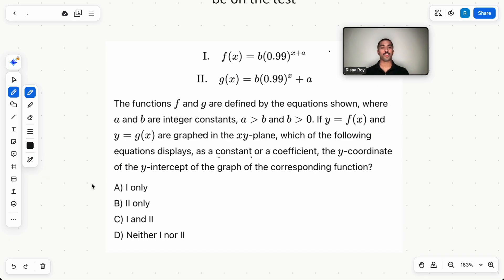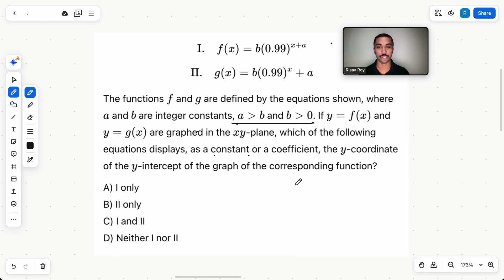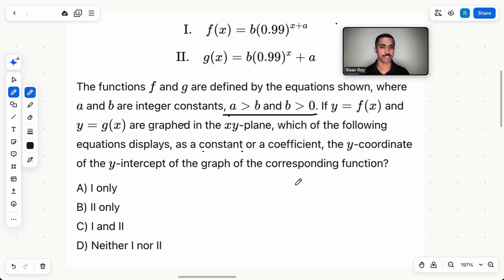The functions f and g are defined by the equations shown where a and b are integer constants. a is greater than b and b is greater than zero. All this part means is that a and b are positive. So it's a lot of extra information just to say that a and b are positive. If y equals f(x) and y equals g(x) are graphed in the xy-plane, which of the following equations displays as a constant or coefficient the y-coordinate of the y-intercept of the graph of the corresponding function? Again, a lot of extra information just to say something pretty simple.